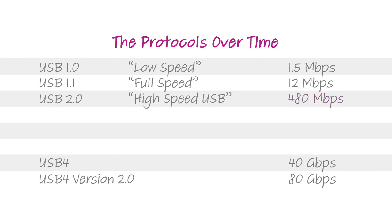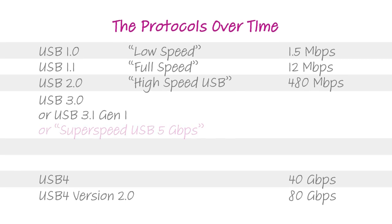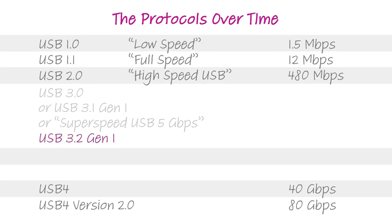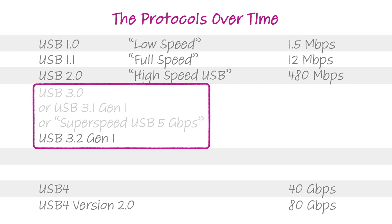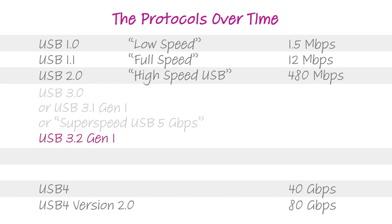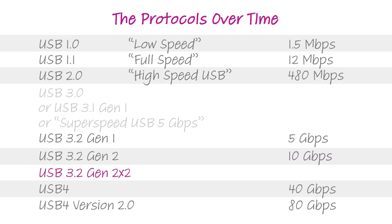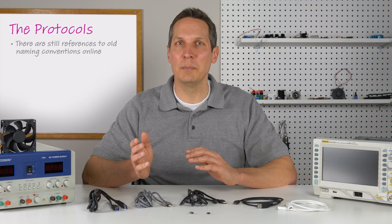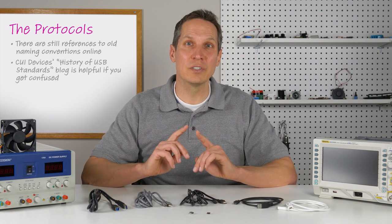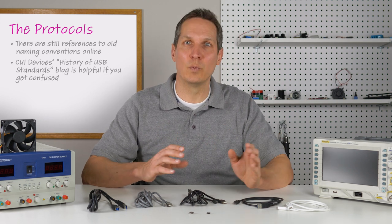The naming convention for USB 3.0 got somewhat confusing. Originally, the very first USB 3.0 standard was referred to as USB 3.0, or USB 3.1 Gen 1, or Super Speed USB 5 gigabits per second — and then they changed their minds, and now it's called USB 3.2 Gen 1. That's four different names for the same protocol. With the latest naming convention, we have USB 3.2 Gen 1 at 5 gigabits per second, USB 3.2 Gen 2 at 10 gigabits per second, and USB 3.2 Gen 2x2 at 20 gigabits per second. If you're confused, I recommend using our History of USB Standards blog as a reference to compare the legacy names with the current names.